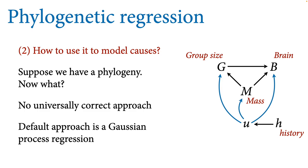So, say we have a phylogeny — now what? There's no universally correct approach because, as the DAG example showed, it depends on the nature of the traits, how they influence each other over time, and rates of speciation and extinction. What's often done — and not a bad idea, but not magic — is Gaussian process regression where we use the phylogeny to think about distances between species and use that as a proxy for shared confounds.